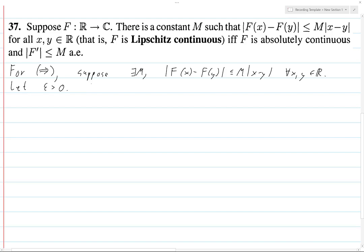Let epsilon be greater than zero. We want to show that the absolute continuity epsilon delta definition holds. And so if we want to choose a delta that works, if we choose delta between zero and epsilon over M...